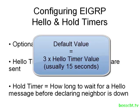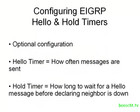This value defaults to 15 usually, but again it depends on the type of network you're on. It is a best practice to configure this timer to be three times the value of the hello timer. So if we configure our hello timer to be two, then we want our hold timer to be six.